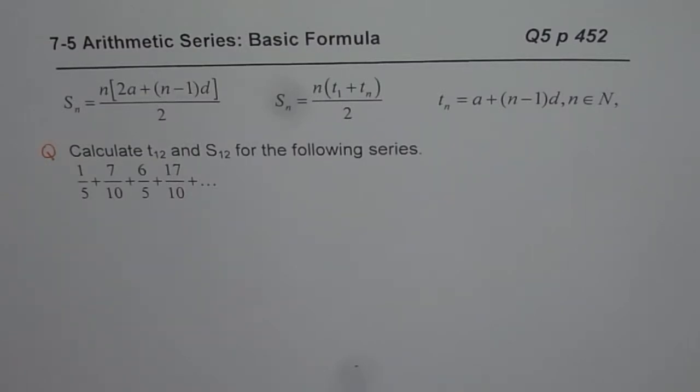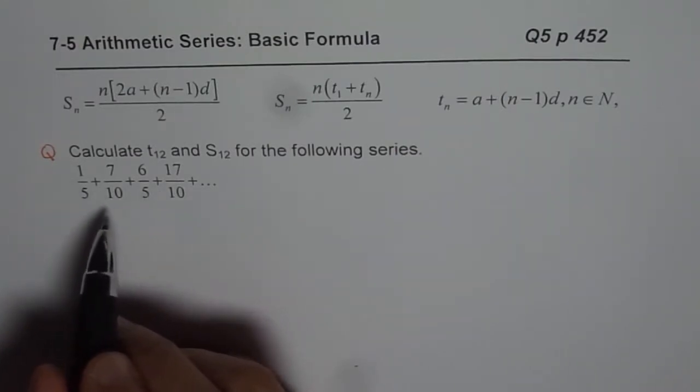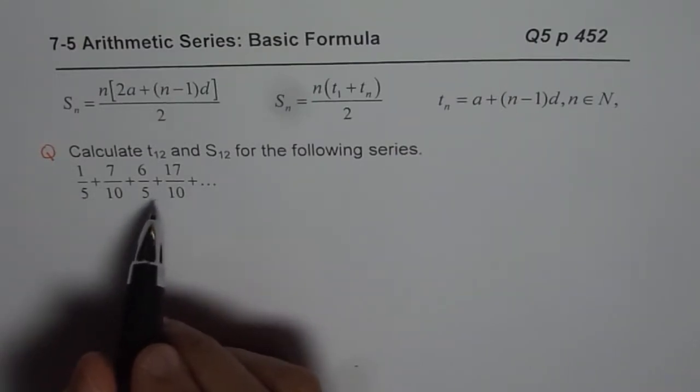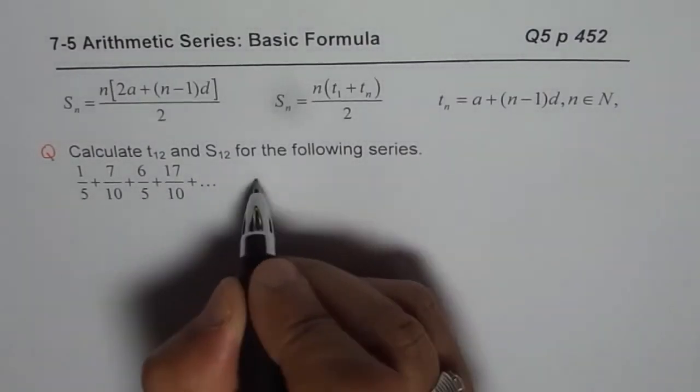1 over 5 plus 7 over 10 plus 6 over 5 plus 17 over 10 and so on. Well, one of the reasons why it has become a bit difficult is because of the way it is written. Now let me rewrite this then I hope it will be simpler for you to understand.